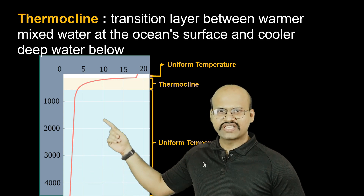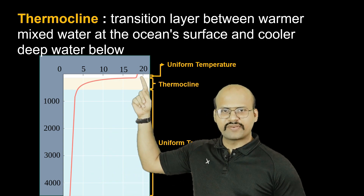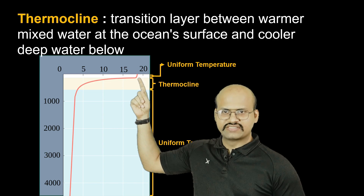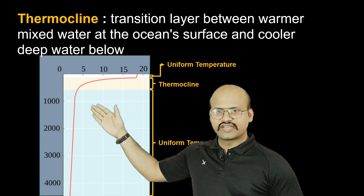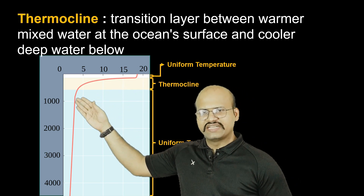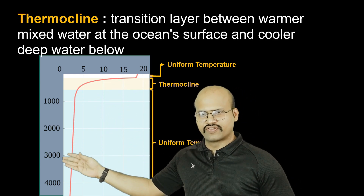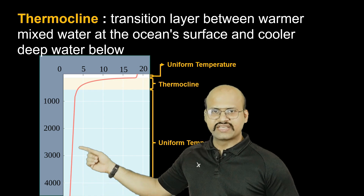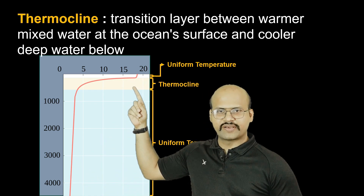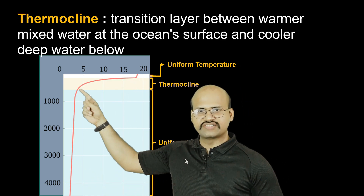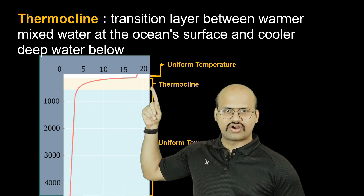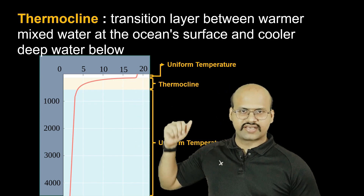We can see that the temperature is uniform for the first few hundred meters, and similarly uniform at the deeper parts of our oceans. But in between there lies a region where the temperature drastically changes, and this region is called the thermocline.